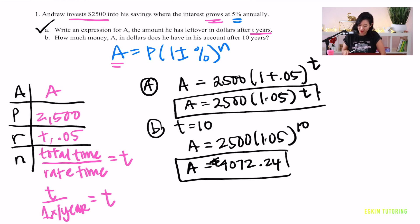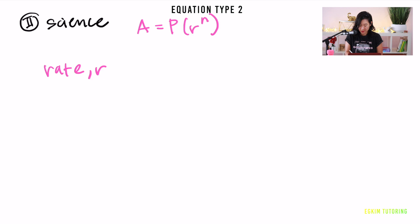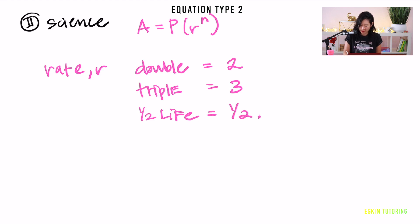The second equation is usually used with science. Again you have a equals p times rate to the power of n. The key difference is that the rate here is not a percent — it's an actual number. If you're doubling, the rate is 2; tripling means rate is 3. For half-life — the time it takes for a mass to drop by half — the rate is one half.